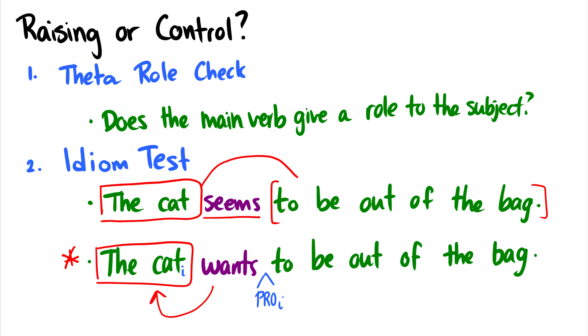We have that the cat wants to be out of the bag and the cat is out of the bag. Okay, that is it for control verbs. If you have any questions, please leave them in the comments below and I'll answer them the best that I can.